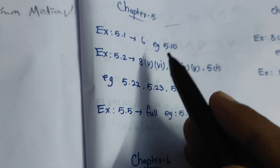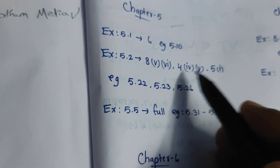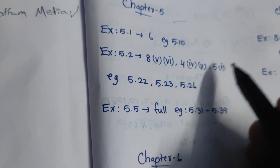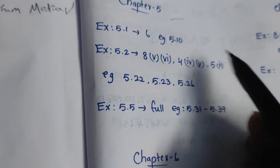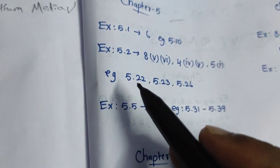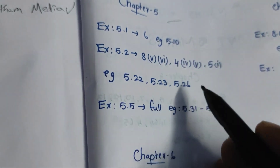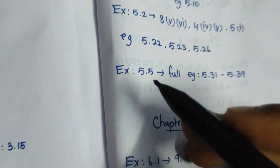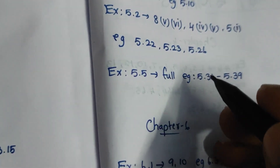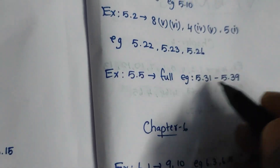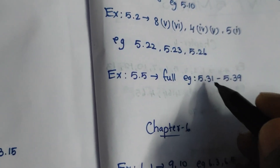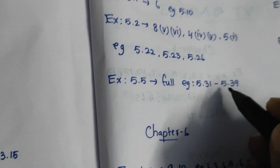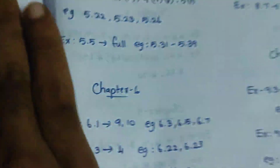Then we will use the 4th sum to the next class. In the 4th sum, the 5th sum is full. Then we will use 5.22, 23, 26. Then the exact same class for 5.5 is full. Then the exact same class for 5.31 and 5.39. Here you can show this is really important, or you can tell the exact same class.